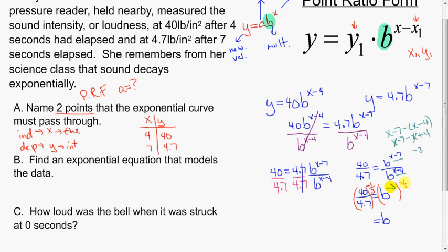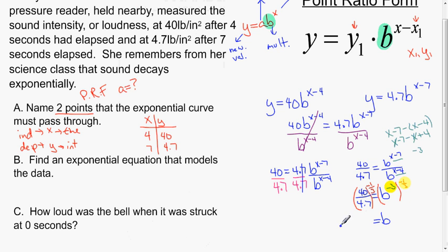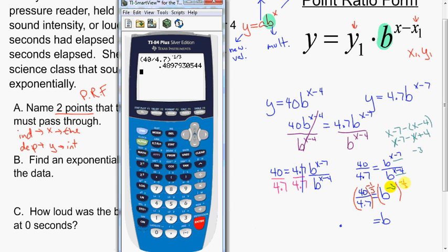I'm going to go to my calculator to find out the answer to the left side of the equation, which is 40 divided by 4.7 to the negative one-third. This gives me that the multiplier, if I round it off, or actually I'll take it to four decimal places, a little bit arbitrary, but you have to realize that exponential functions can be sensitive. So I'm going to round this to 0.4898.